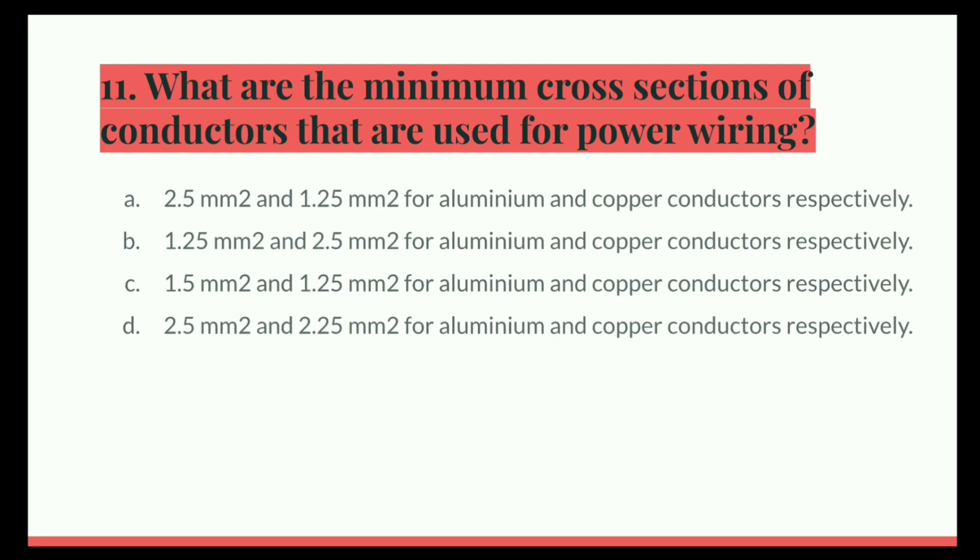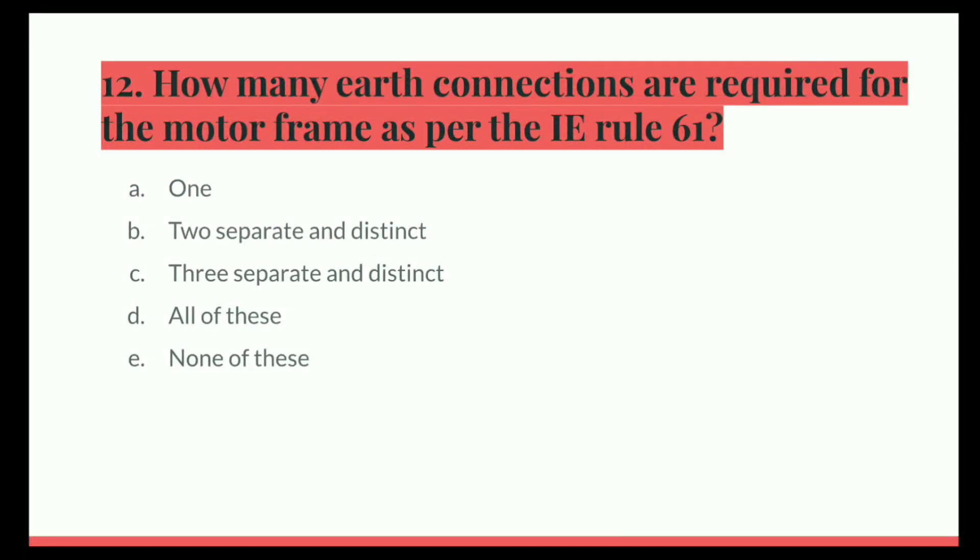Next question. What are the minimum cross sections of conductors that are used for power wiring? Option A, 2.5 mm² and 1.25 mm² for aluminum and copper conductors respectively. B, 1.25 mm² and 2.5 mm² for aluminum and copper conductors respectively. C, 1.5 mm² and 1.25 mm² for aluminum and copper conductors respectively. D, 2.5 mm² and 2.25 mm² for aluminum and copper conductors respectively. And the correct answer is 2.5 mm² and 1.25 mm² for aluminum and copper conductors respectively.